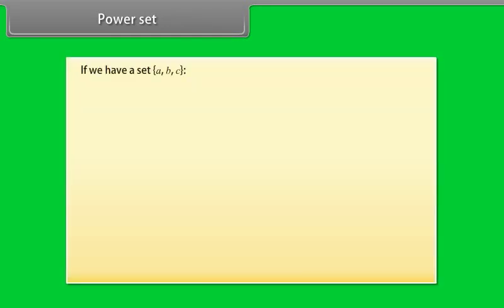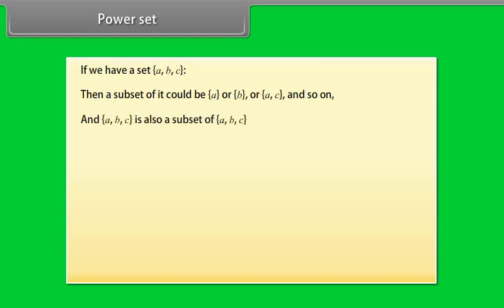Power set. If we have a set A, B, C, then a subset of it could be A or B or A, C and so on. And A, B, C is also a subset of A, B, C. And the empty set is also a subset of A, B, C.